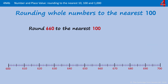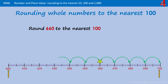Rounding 660 to the nearest 100. Here's 660 on the line — the 100's either side are 600 and 700. You can see that 660 is much nearer to 700 than it is to 600. So when we round 660 to the nearest 100, that's 700.